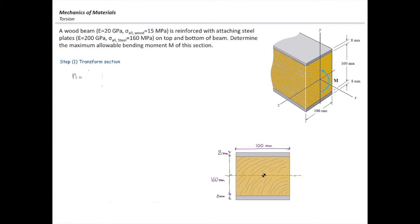Steel is stronger. If you want to replace wood, which is weaker than steel, you need a smaller part of steel to be equivalent to that wood. So in that case, I need to reduce the width of the section, meaning the n-factor should be smaller than 1. So the weaker material goes to the numerator and the stronger one goes to the denominator. The n-factor would be E of wood divided by E of steel. I multiply the original width of wood by that n-factor to convert it into steel, which gives a width of 10 mm.